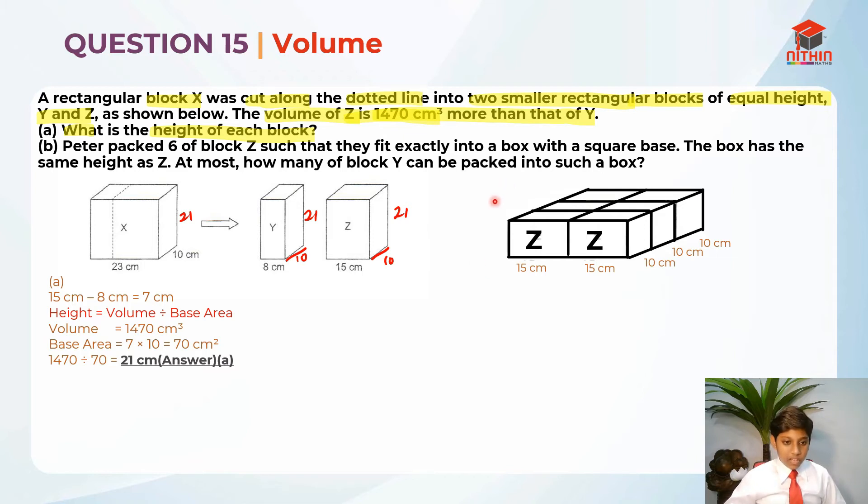So part B. Peter packed six of block Z such that they fit exactly into a box with a square base. The box has the same height as Z. At most, how many block Y can be packed into such a box?